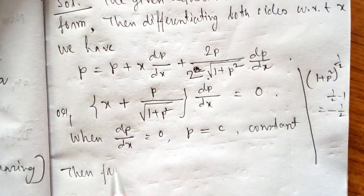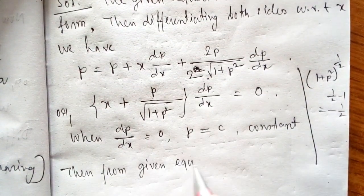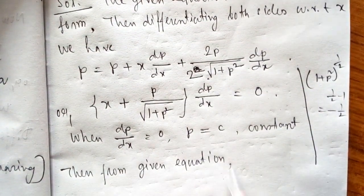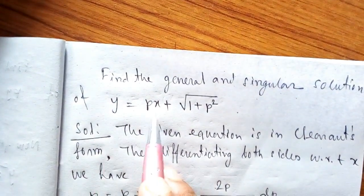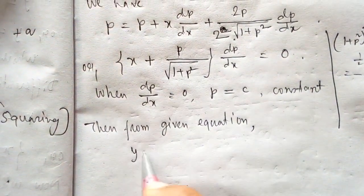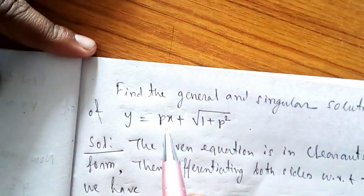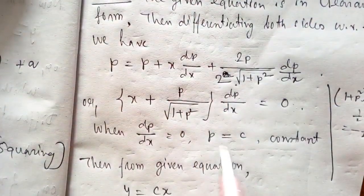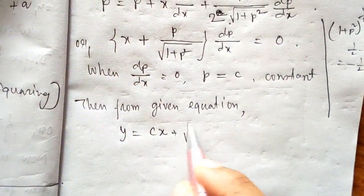From the given equation, substituting p = c, we get Y = cx + √(1 + c²). This is the general solution.